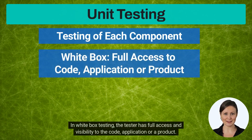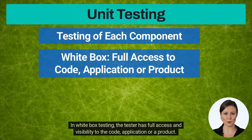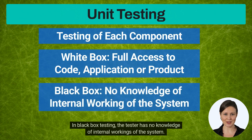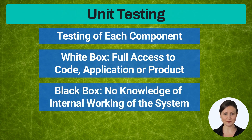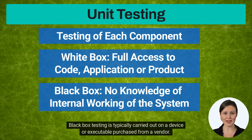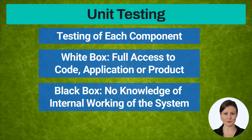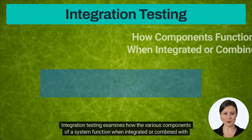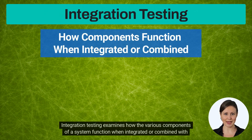There are two types of unit testing. In white box testing, the tester has full access and visibility to the code, application, or product. In black box testing, the tester has no knowledge of the internal workings of the system. Black box testing is typically carried out on a device or executable purchased from a vendor.